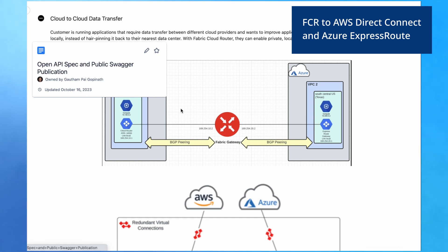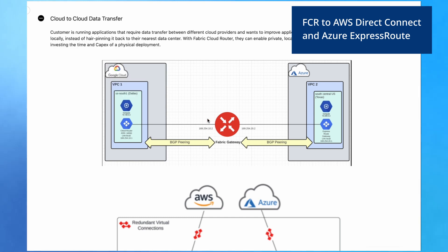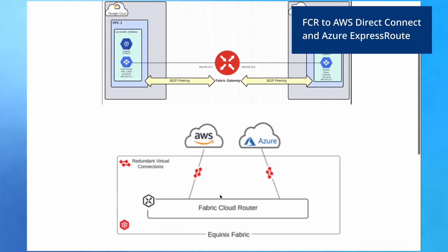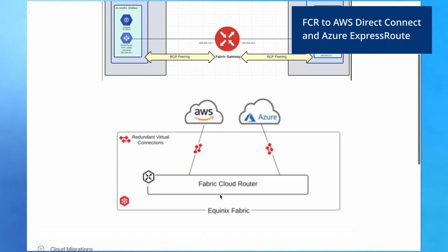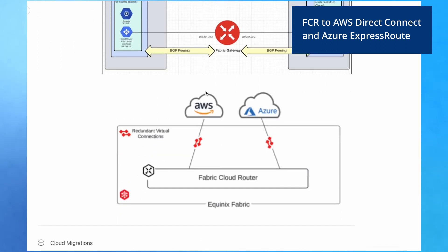Here we are going to create the Fabric Cloud Router and connect it to Azure and AWS cloud, and configure the routing protocol.